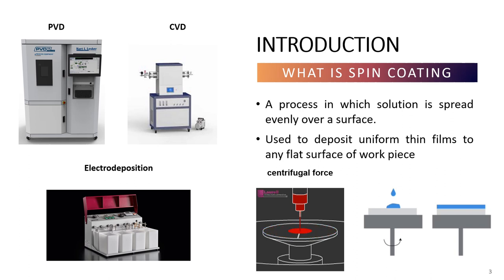The spin coater coats the surface by using a principle of centrifugal force to achieve uniform thin films. The substrate is rotated at a relatively high speed, around 300 to 5,000 revolutions per minute. The thickness of the film depends on the nature of the polymer or solvent, spinning speed, and time. The spin coating method is easy to operate by controlling the speed corresponding to the desired film thickness.